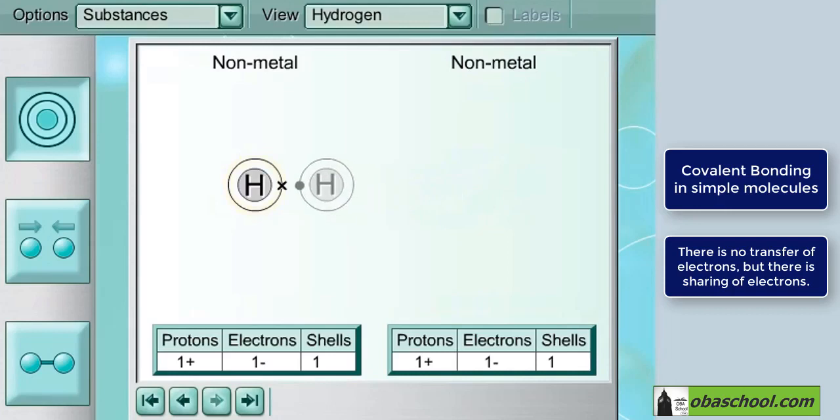What happens is the attraction occurs between the two atoms and they are sharing one pair of electrons, which consists of one electron from the first hydrogen atom and one electron from the second hydrogen atom.